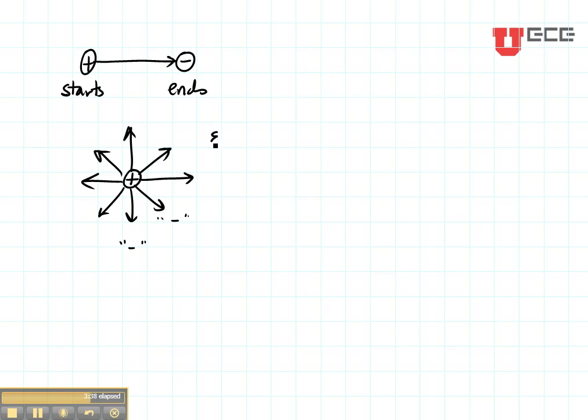Now remember that the electric field depends on the material, but the electric flux density does not. The electric flux density is the density of these lines. Each one of these lines can be called a flux line. The density of them, see right here how close they are together? The density of those lines is the electric flux density.